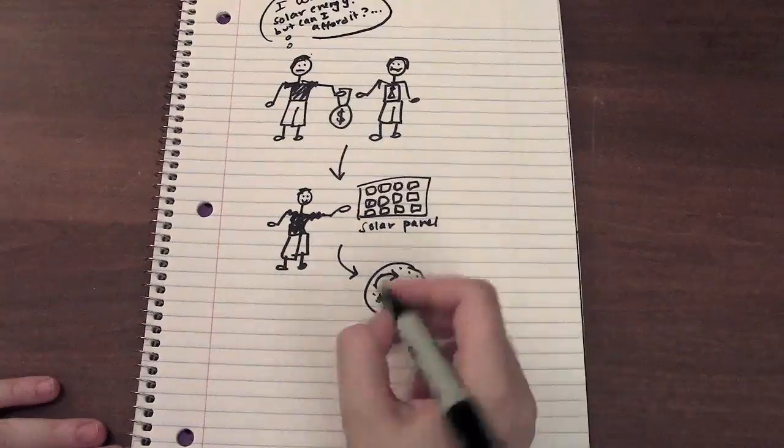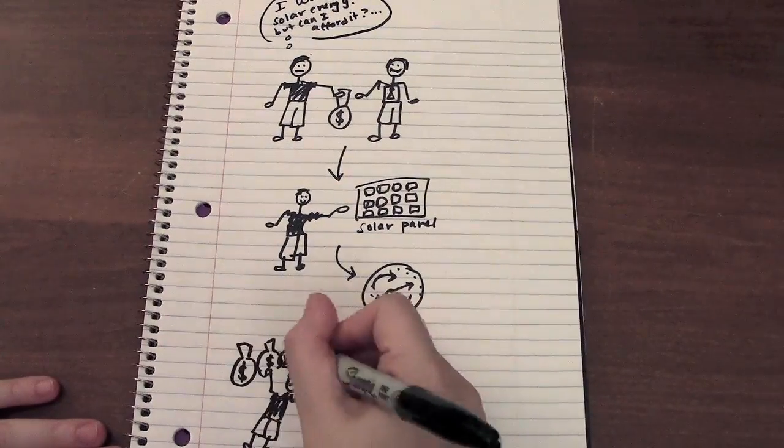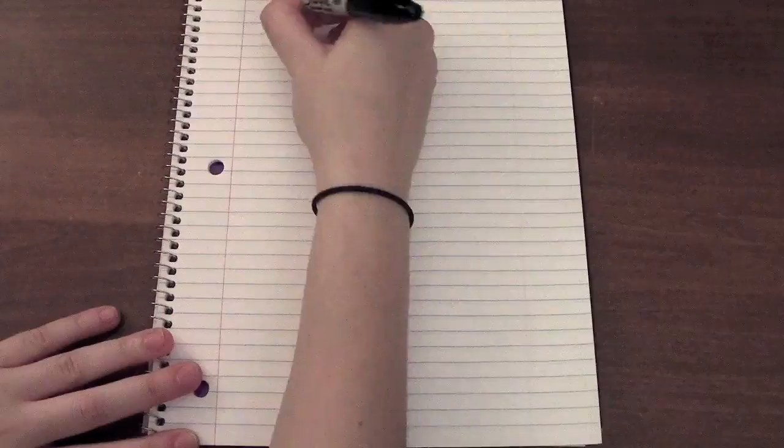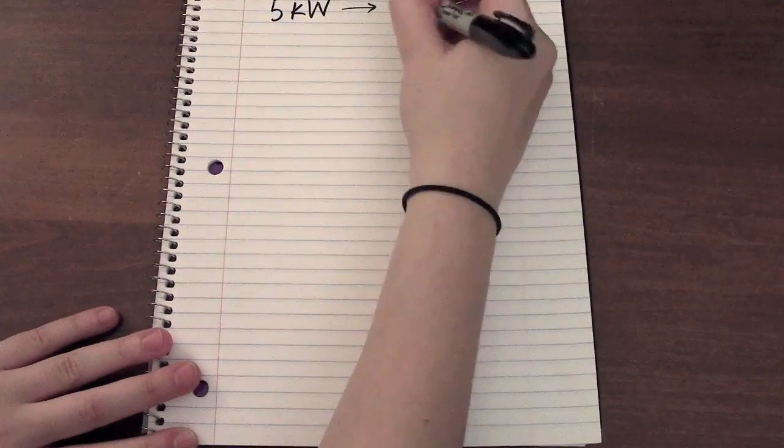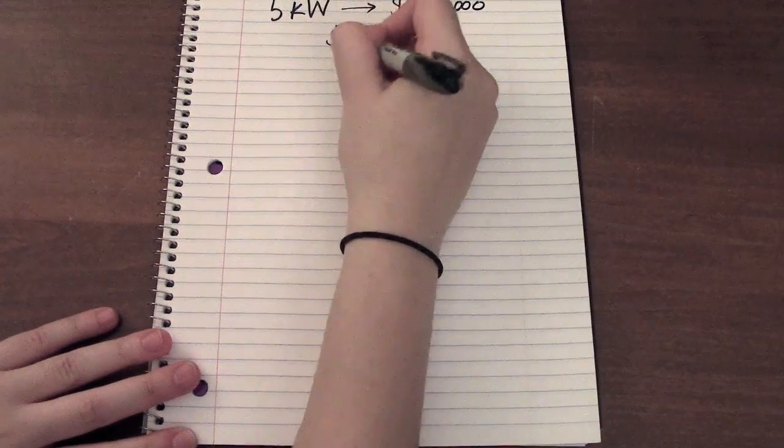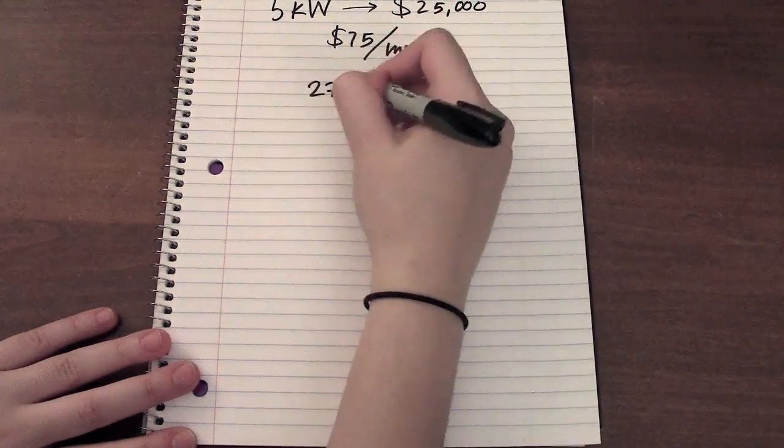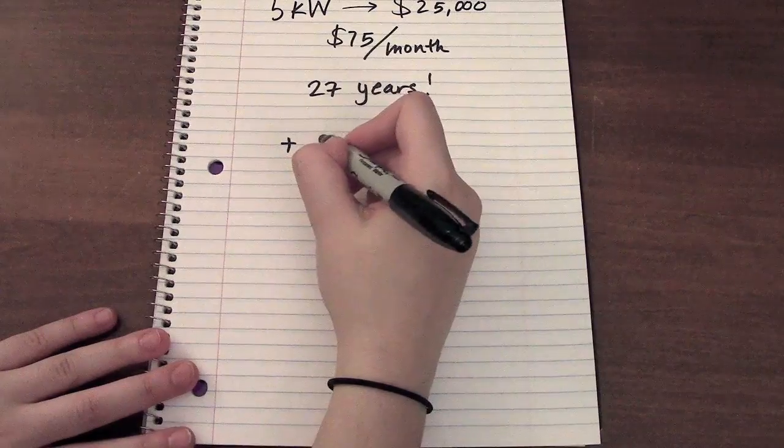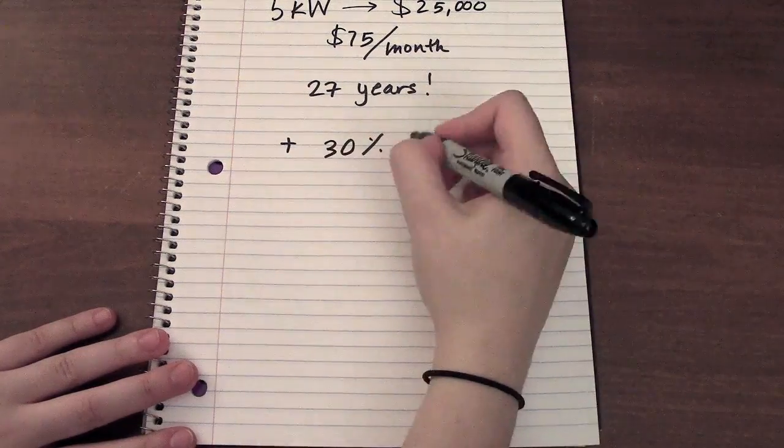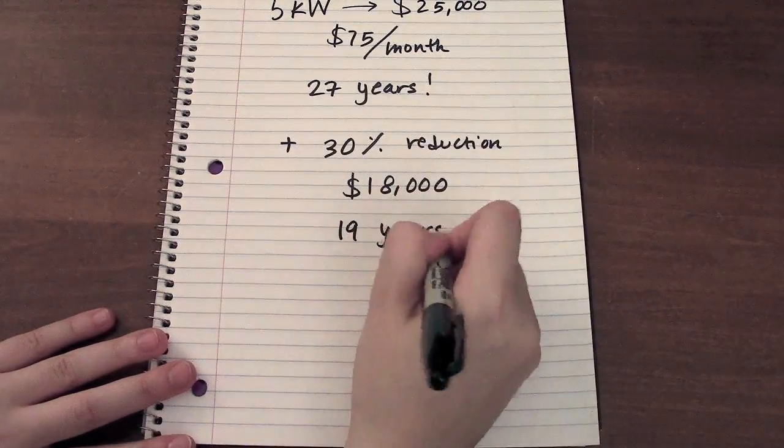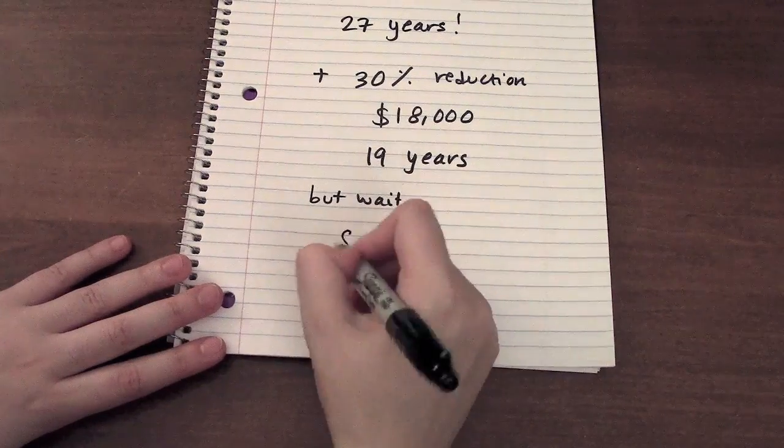The upfront cost might be unaffordable and the system might not pay for itself over time. A 5 kilowatt system initially costs around $25,000 without incentives and would generate around $75 a month in electricity bills. This would take 27 years to pay back the initial cost of the system, but with a 30% tax deduction, the system would cost $18,000 and the payback would only take 19 years.